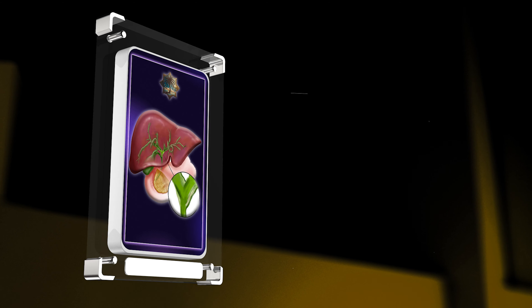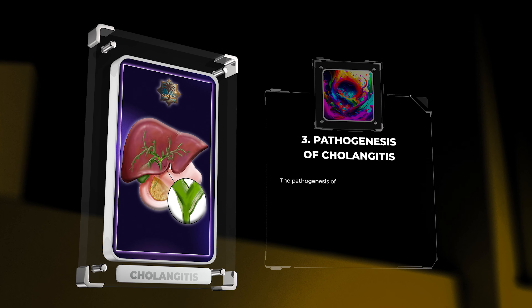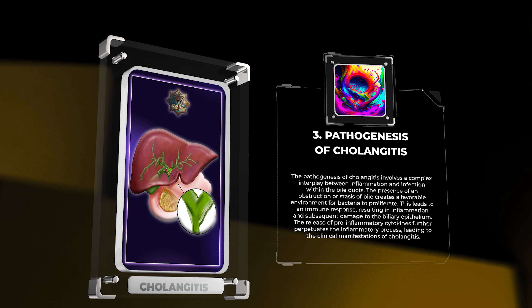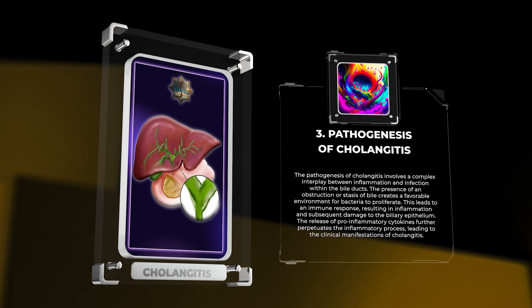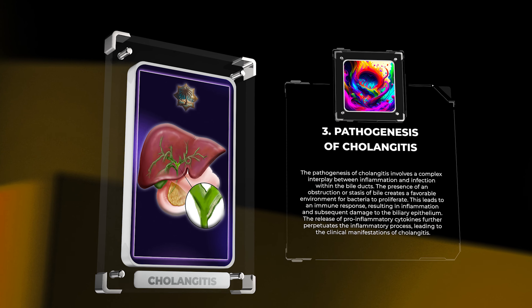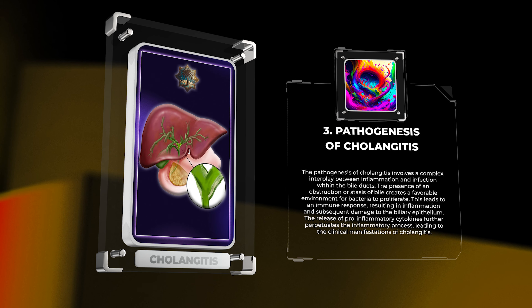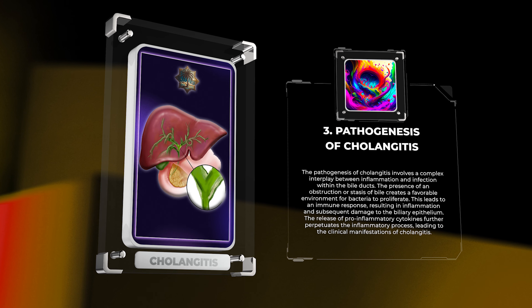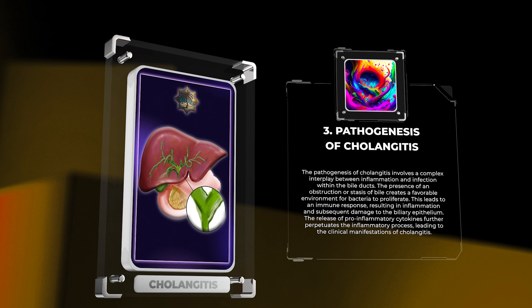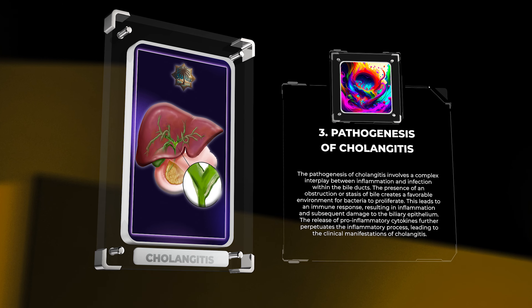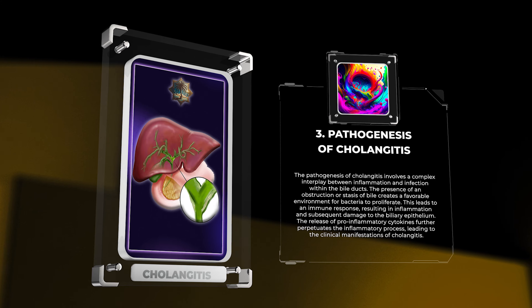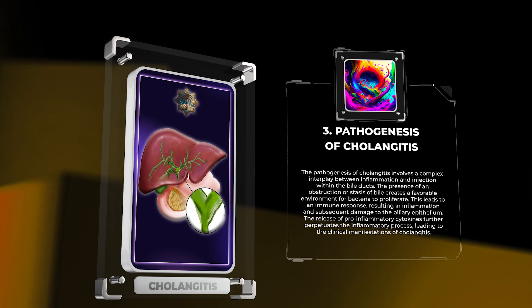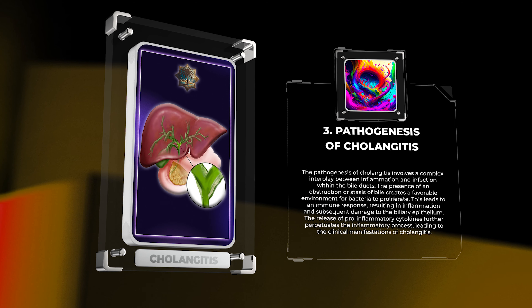The pathogenesis of cholangitis involves a complex interplay between inflammation and infection within the bile ducts. The presence of an obstruction or stasis of bile creates a favorable environment for bacteria to proliferate. This leads to an immune response, resulting in inflammation and subsequent damage to the biliary epithelium. The release of pro-inflammatory cytokines further perpetuates the inflammatory process, leading to the clinical manifestations of cholangitis.